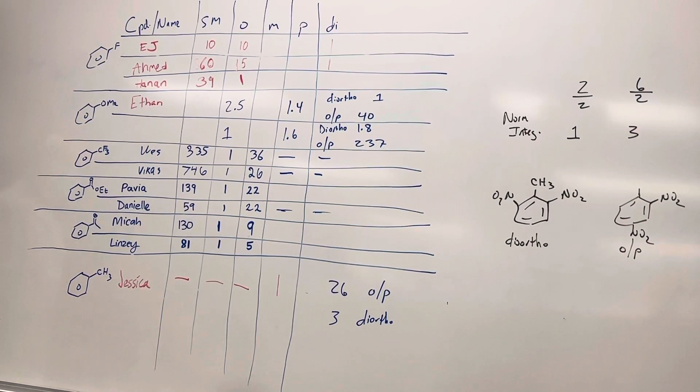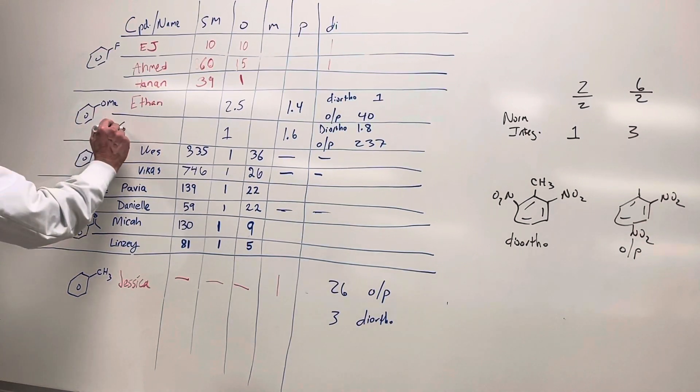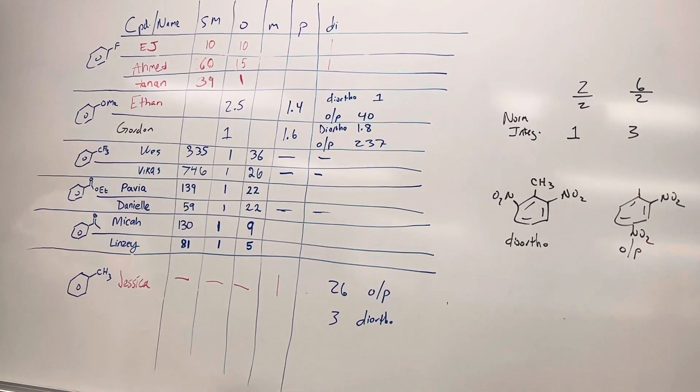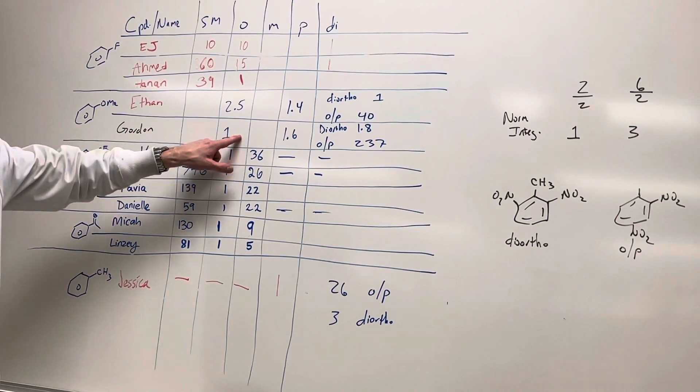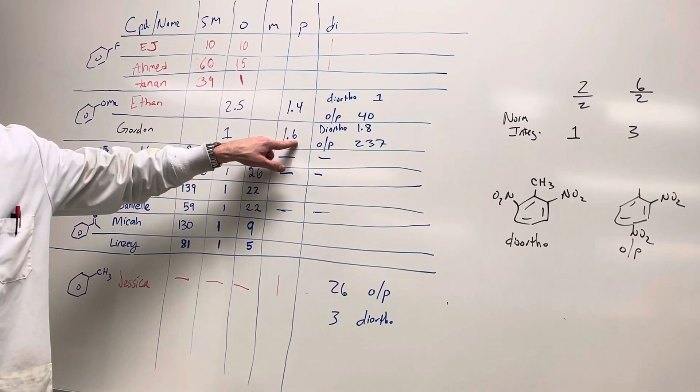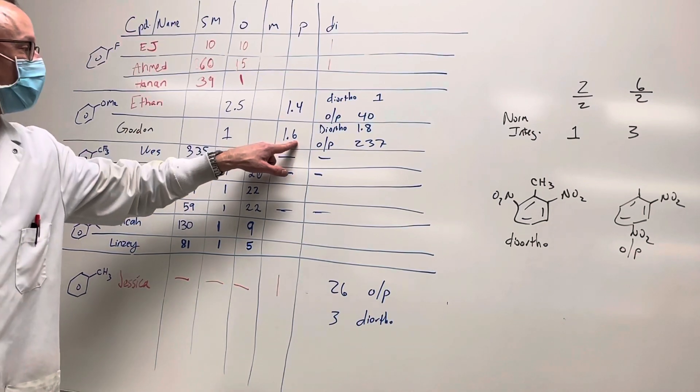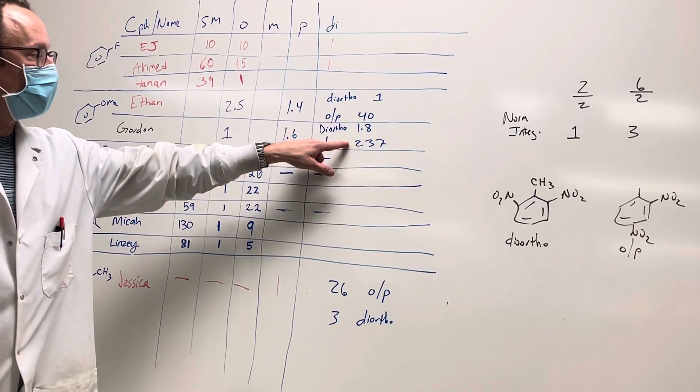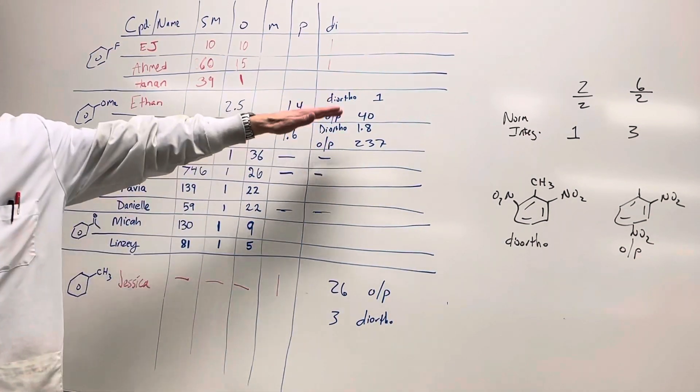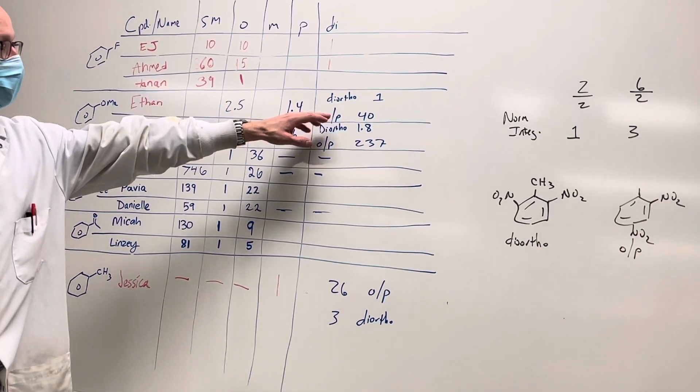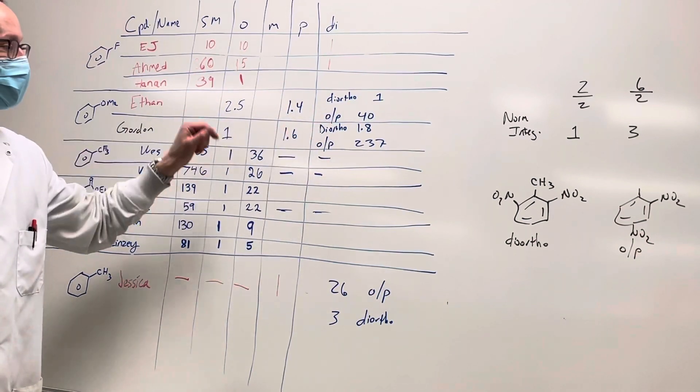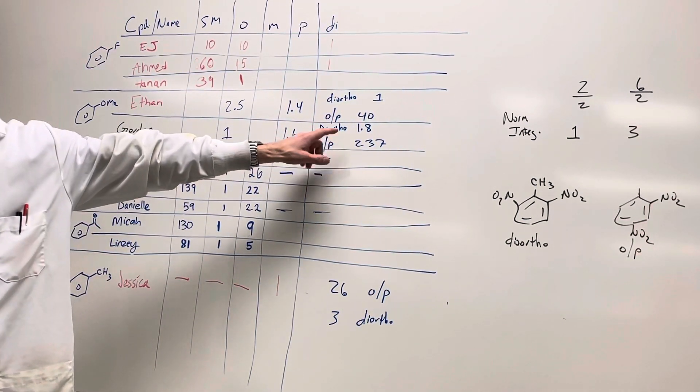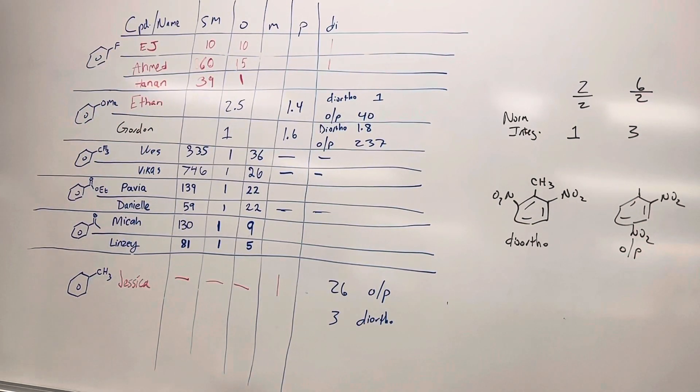We can go to the other activating group, which was anisol. So what we see here is we've got actually four products. You have some ortho, you have some para, which is what we expect because the methoxy group is a strong activating group. But the majority of their product was that di-nitro ortho para. You can buy a lot, right? For Ethan, that was 40, a relative 40 times more of the ortho para to the rest. And Gordon's was 237 times more than the rest. So it was a lot of di-nitrated product. And again, that's not terribly surprising. With these strong activating groups, it's sometimes hard to stop them from just at one substitution.